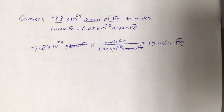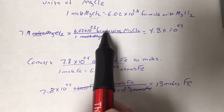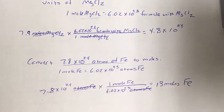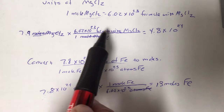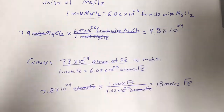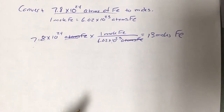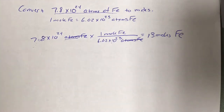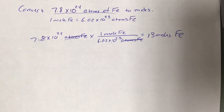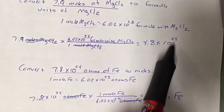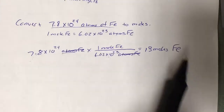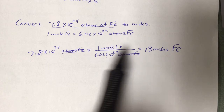Students often ask: when converting to atoms, molecules, or formula units, will I get a number in scientific notation? Yes — you will always get a number in scientific notation in those cases. Will I always get a normal number when finding moles? Probably, though you could get scientific notation for very small mole values. But it won't be giant exponents like 24 or 22 — those numbers are much more reasonable when converting to moles.